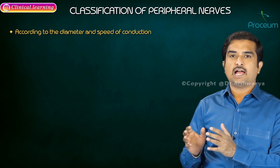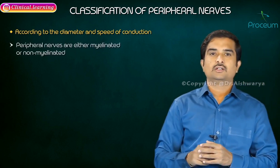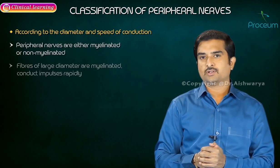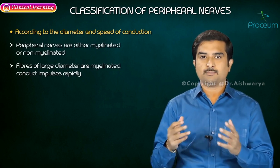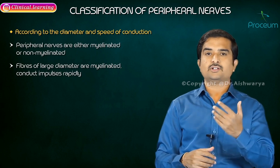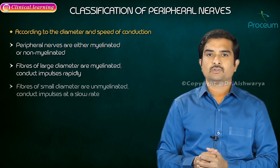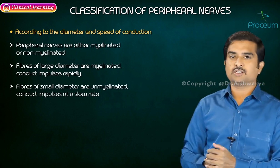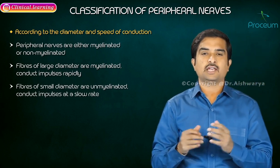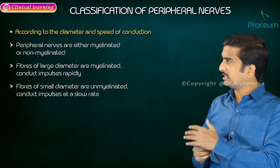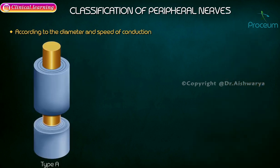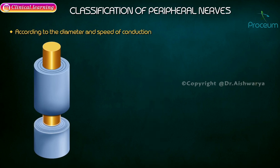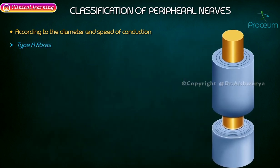According to the diameter and speed of conduction, the peripheral nerves are either myelinated or unmyelinated. Fibers of larger diameter are myelinated and hence conduct impulses rapidly, while fibers of smaller diameter are unmyelinated and conduct impulses at a slower rate. They are classified as Type A, Type B, and Type C fibers.